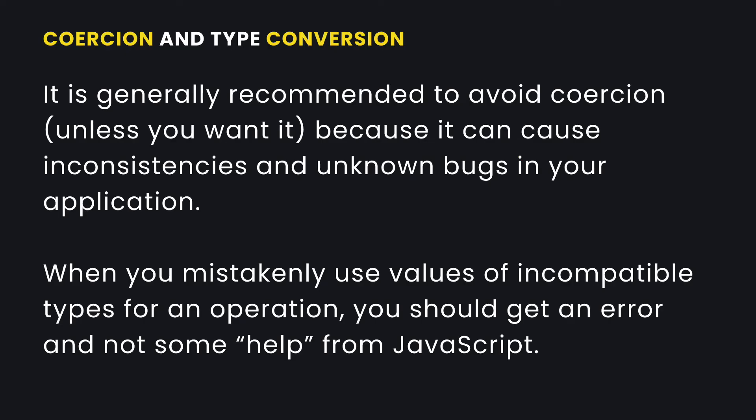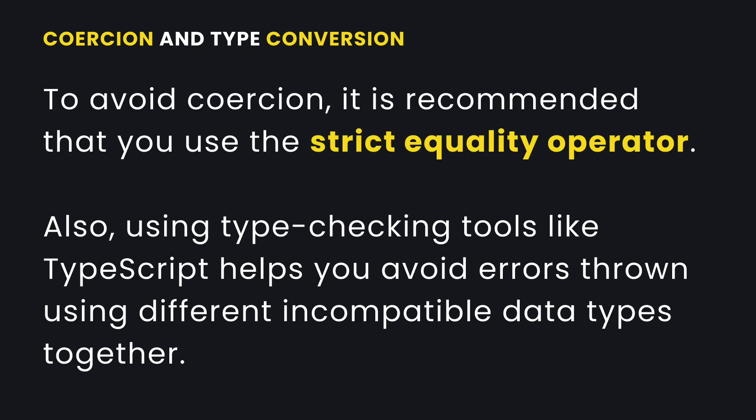It is generally recommended to avoid coercion because it can cause inconsistencies and unknown bugs in your application. When you mistakenly use values of different types for an operation, you should get an error, not some help from JavaScript. To avoid coercion, first ensure you're always using the strict equality operator. You can also use type checking tools like TypeScript that help you catch errors thrown when you use different data types together.